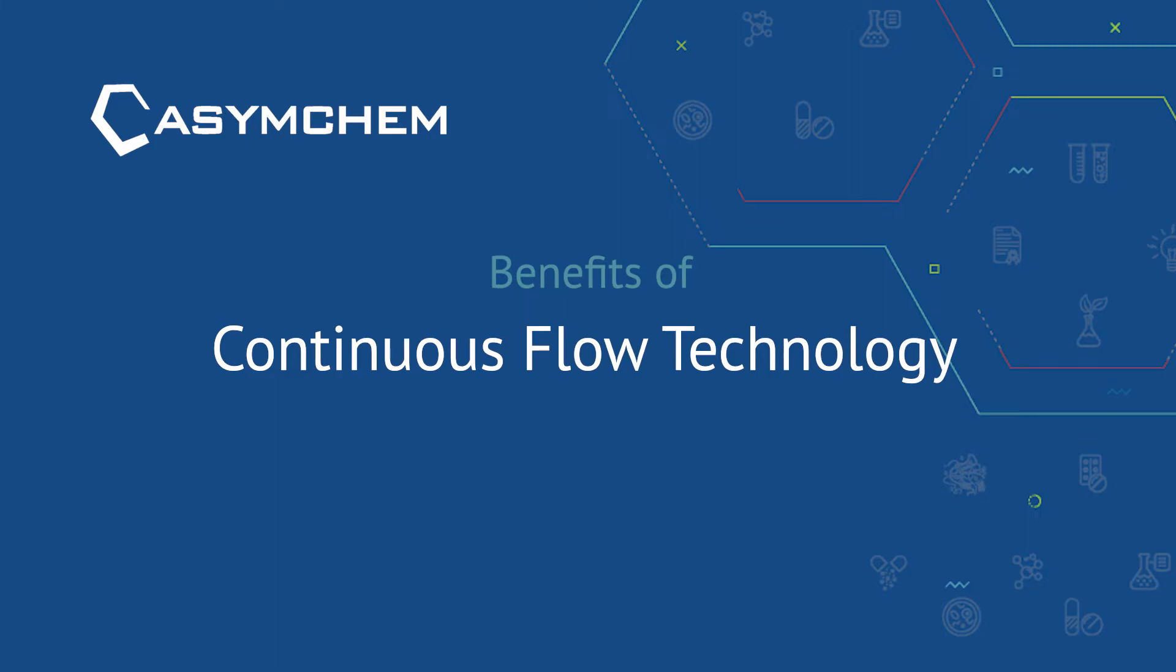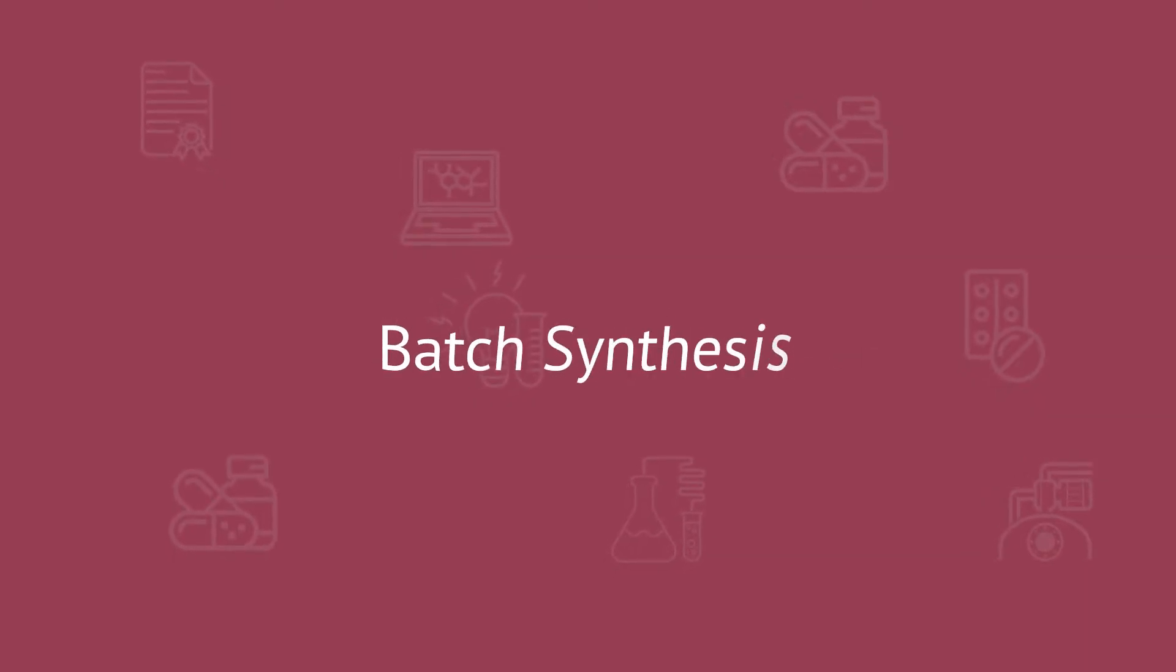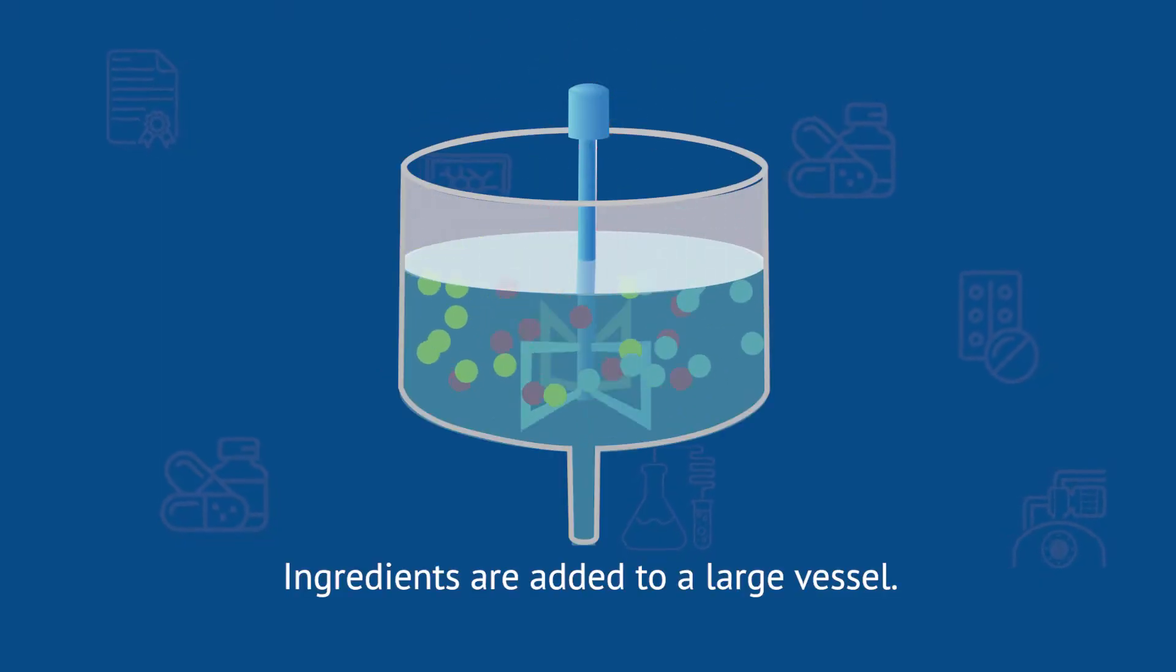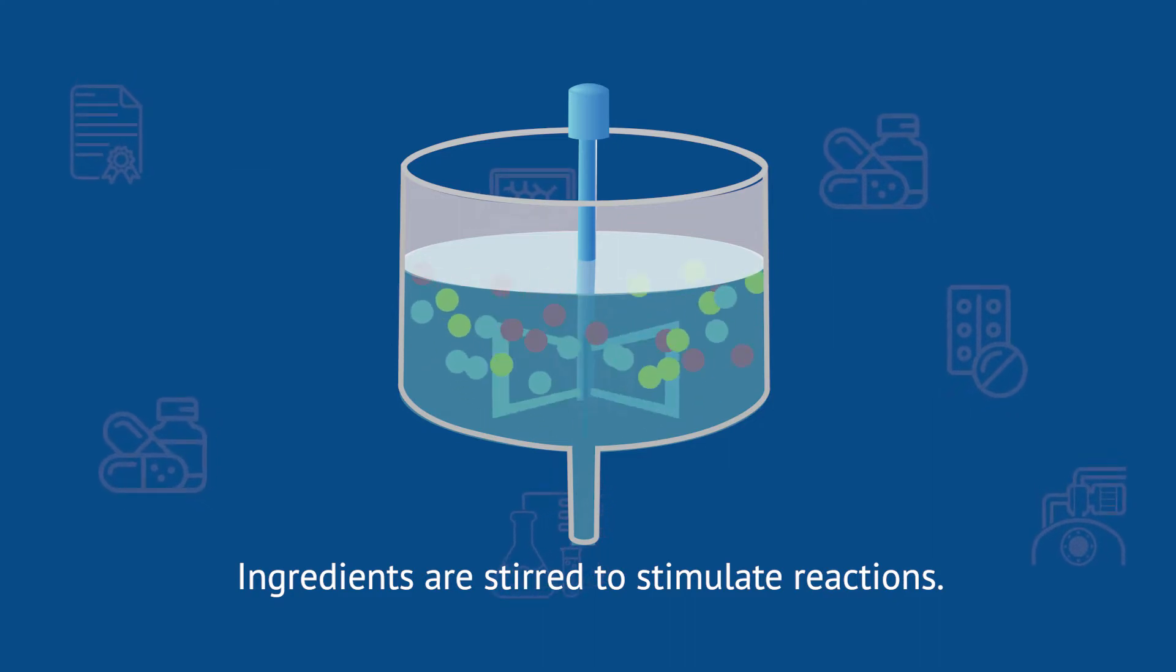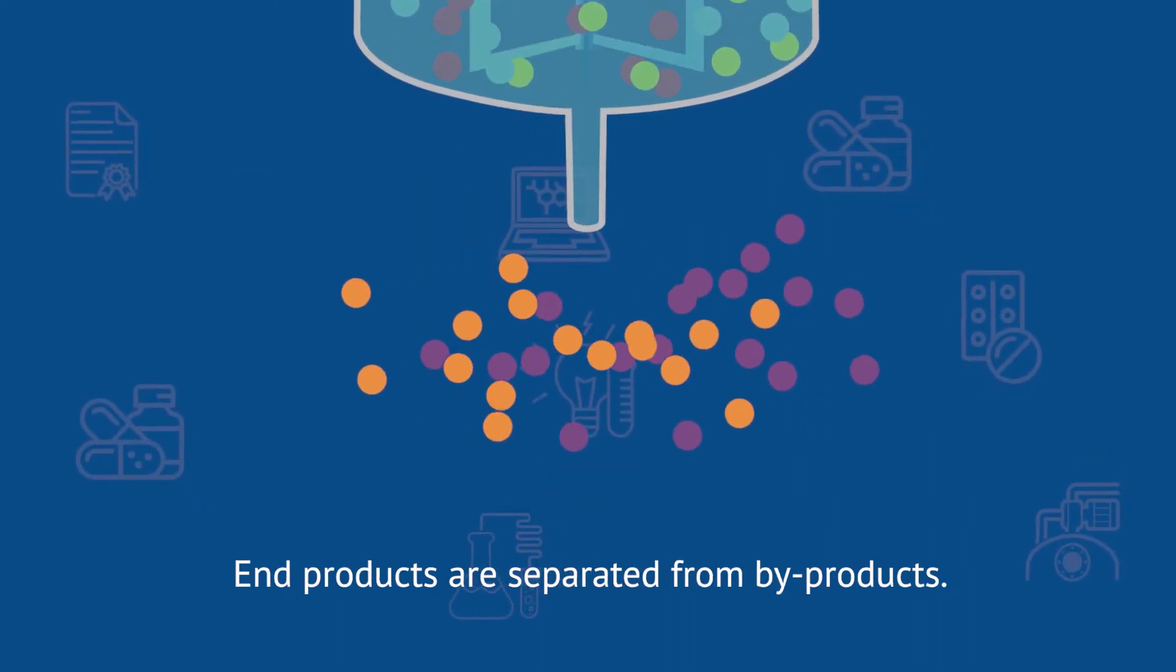Most manufacturing level chemistry in the pharmaceutical industry is done through batch synthesis where raw materials, catalysts and other ingredients are added to a large vessel. They are stirred to stimulate chemical reactions and eventually the desired end product is separated from byproducts and solvents.